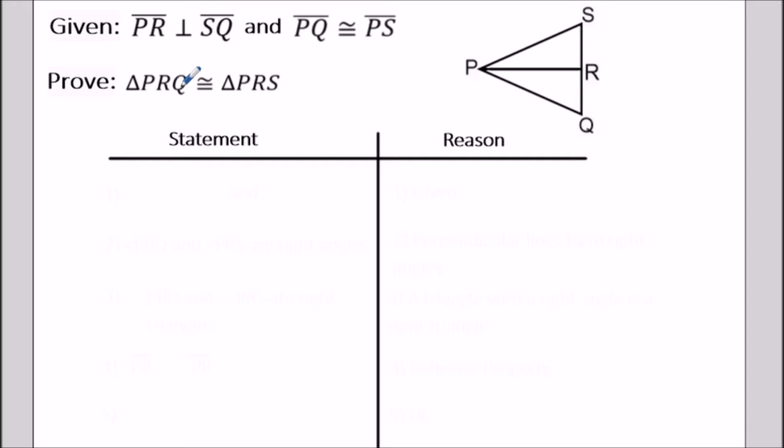We have given PR perpendicular to SQ and PQ congruent to PS. We want to prove that the two triangles in this diagram are congruent.